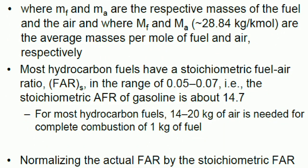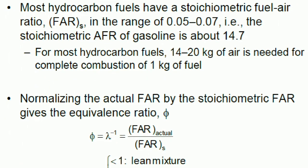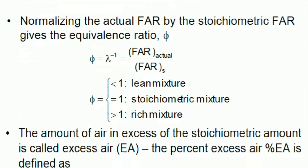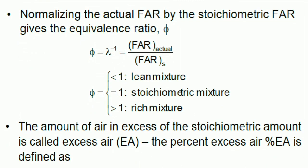Normalizing the actual fuel-air ratio by the stoichiometric fuel-air ratio gives the equivalence ratio φ. φ = λ⁻¹ = (FAR)actual/(FAR)stoichiometric. When φ = 1, we have a stoichiometric mixture. When φ < 1, we have a lean mixture. When φ > 1, we have a rich mixture. So there are three types of mixtures: lean mixture when less than 1, stoichiometric mixture when equal to 1, and rich mixture when greater than 1.